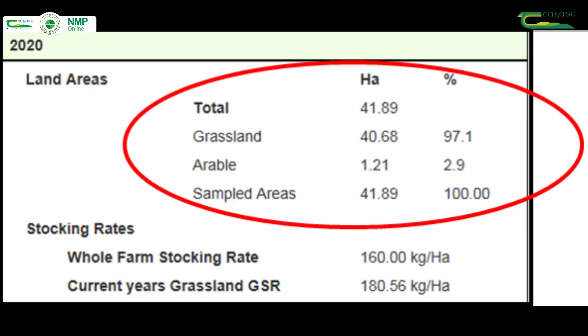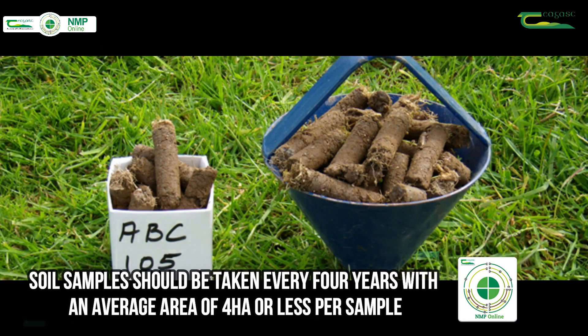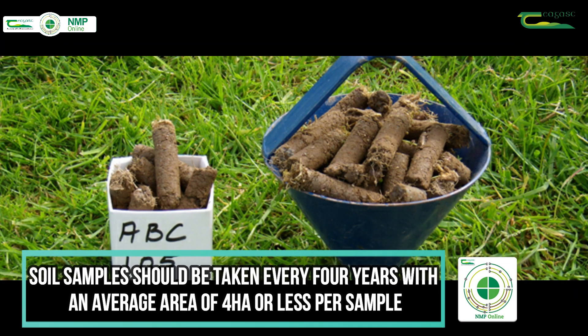The farm area is broken down into grassland and tillage and the percentage of land with soil samples. Soil samples should be taken at least every four years with an average area of four hectares or less per soil sample.